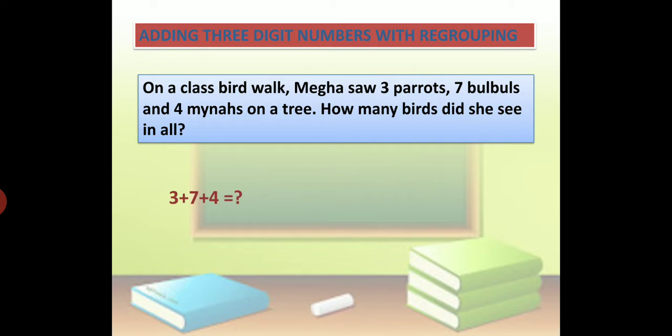First of all, we have to arrange them. You can see here there is no 2 digit, only 1 digit. First 3 parrots, then 7 bulbuls and 4 mynahs. So we have to put the addition sign.